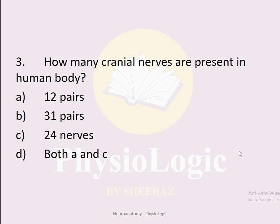MCQ number three: How many cranial nerves are present in the human body? Option A: 12 pairs. Option B: 31 pairs. Option C: 24 nerves. Option D: both A and C. The correct option is D, both A and C. There are 12 pairs of cranial nerves, which also means the total number of nerves is 24. So the correct option is 12 pairs or 24 nerves.